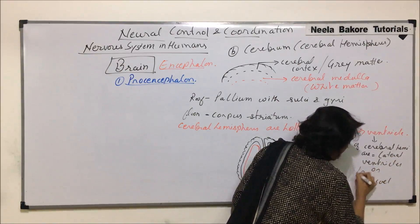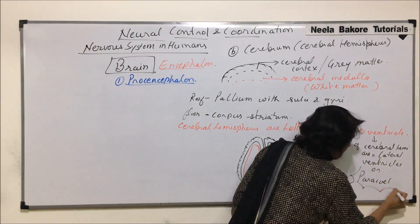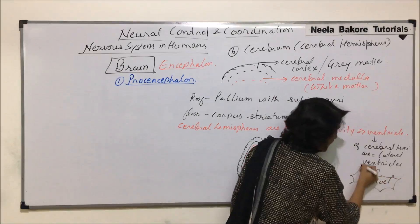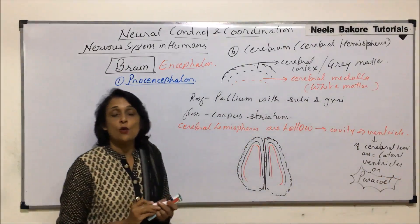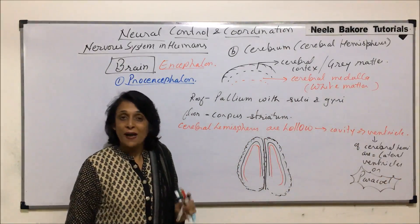The cavities or ventricles found in the cerebral hemispheres are known as lateral ventricles, or paracoel. This is an important term — the ventricles of the cerebral hemispheres are called either lateral ventricles or paracoel.